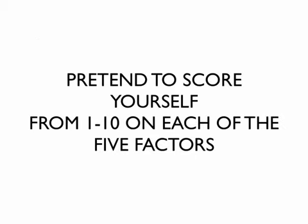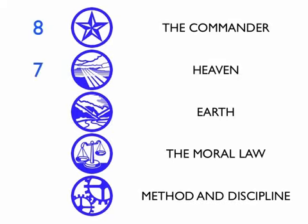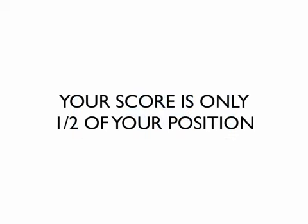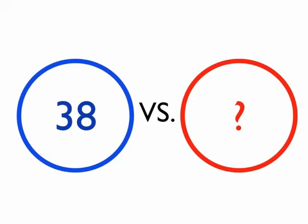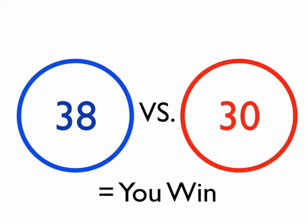To illustrate the idea of advantage, imagine you have given yourself a score on the five factors. You rate yourself from one to ten on each factor — in this example, you give yourself a score of 38. This score is important, but it is only half of your position. To fully understand who has the advantage, you must also assess your opponent's score. If their score is higher than yours, you are in a poor position and you will lose. If lower, you are in a strong position and you will win.